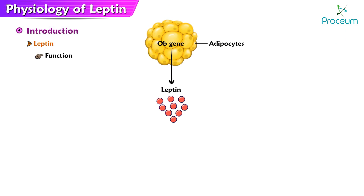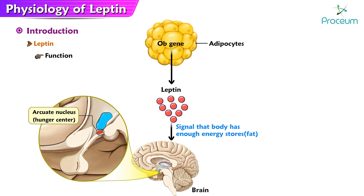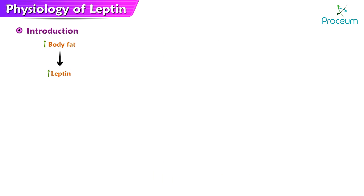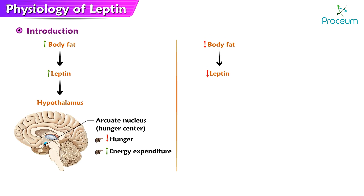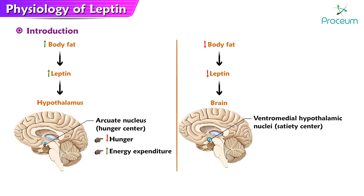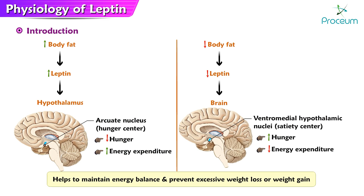The main function of leptin is to signal the brain that the body has enough energy stored in the form of fat, thus reducing hunger and promoting a feeling of fullness. When the level of body fat increases, more leptin is produced and released into the bloodstream, signaling the hypothalamus to reduce hunger and increase energy expenditure. Conversely, when body fat decreases, less leptin is produced, signaling the brain to increase hunger and reduce energy expenditure, helping to maintain energy balance and prevent excessive weight loss or gain.